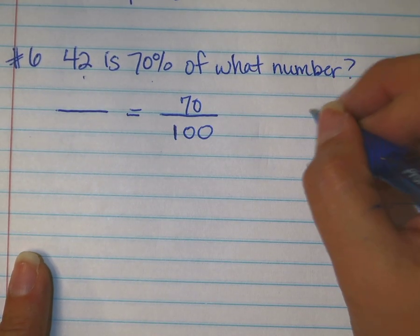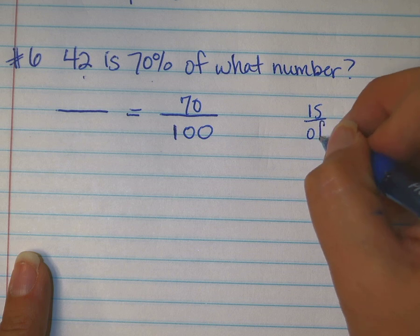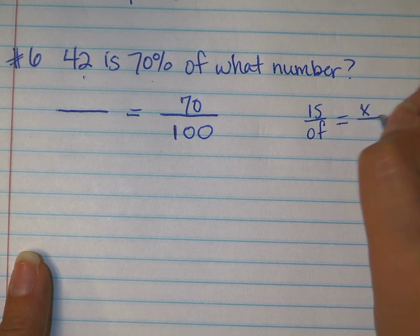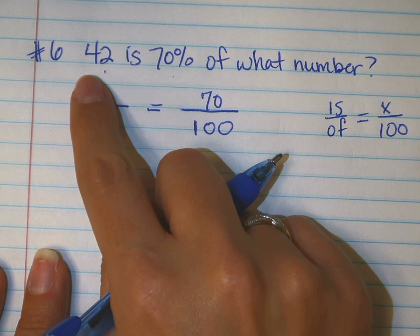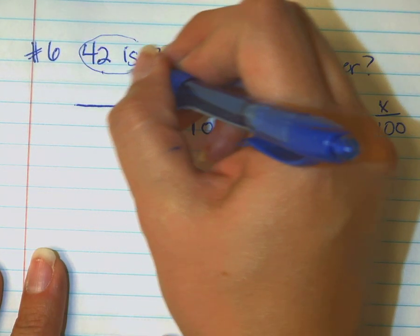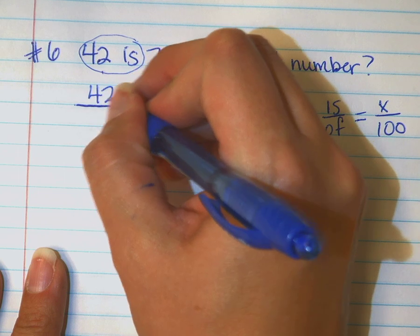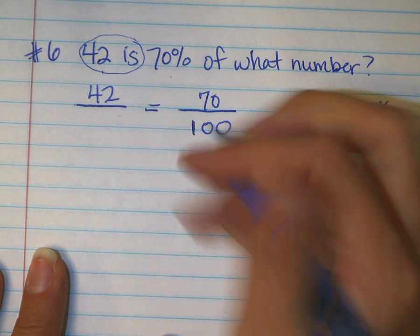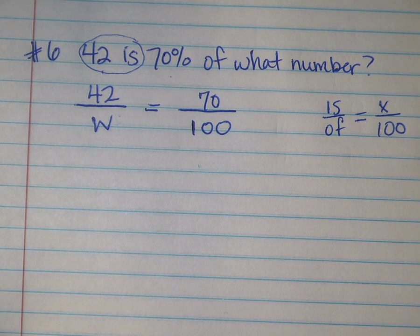Then, we just sort of learned about this is over of, which can be helpful sometimes when trying to decide what the part and what the whole is. It says 42 is. That means that's my part, and then my unknown is the whole.